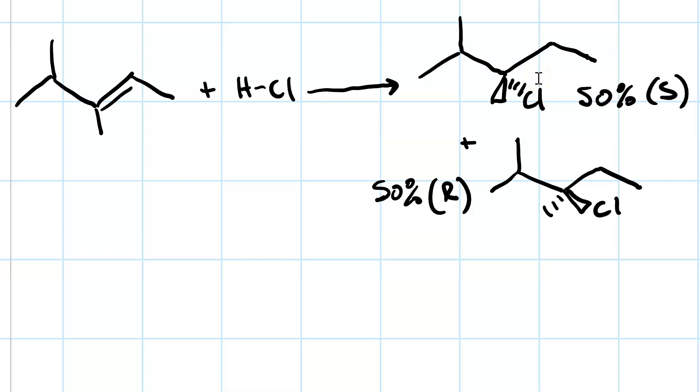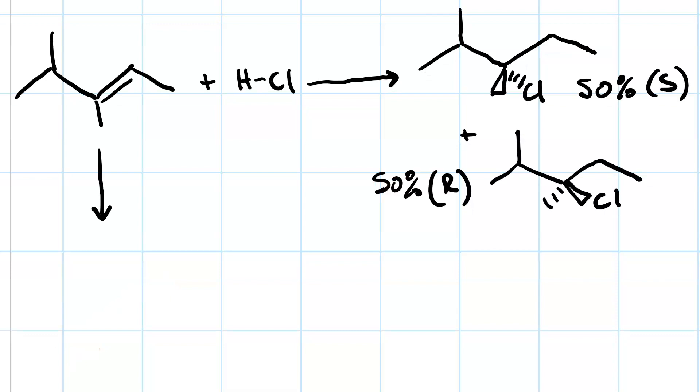Let's look at the mechanism to find out why. My first step, the pi bond of the alkene acts as a base and takes the proton from the acid. This produces a chloride ion.